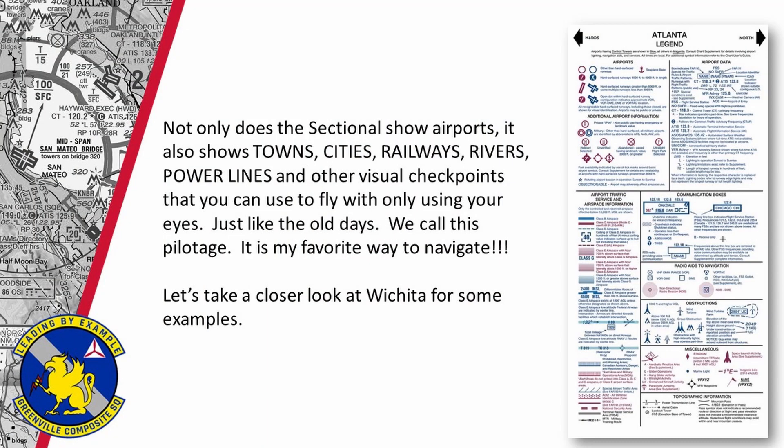Looking at the sectional, you can see it does a lot more than just show you where the airports are. It shows you items like where the towns are, the railways, power lines, windmills, and other items you can use for checkpoints when you're flying. You can fly to any place just by using one of these maps and looking out the window — you don't need GPS, you don't need radio navigation. When the skies are blue, you can just look out the window. Flying by looking out the window is called pilotage, and it's absolutely my favorite way to fly.